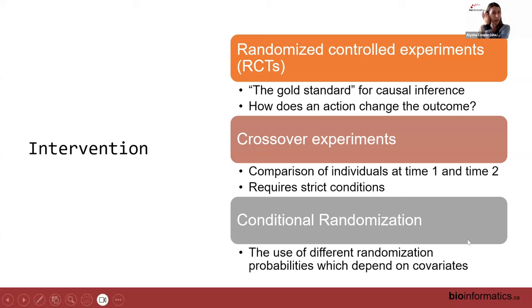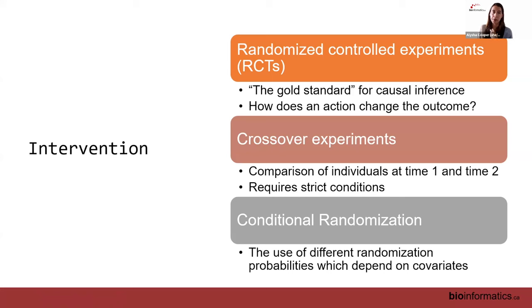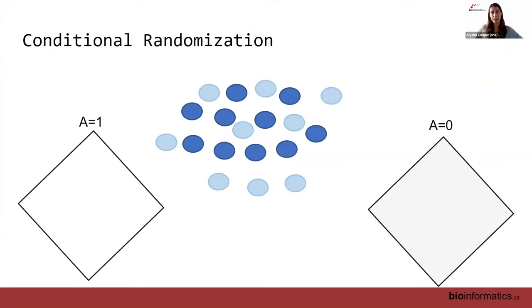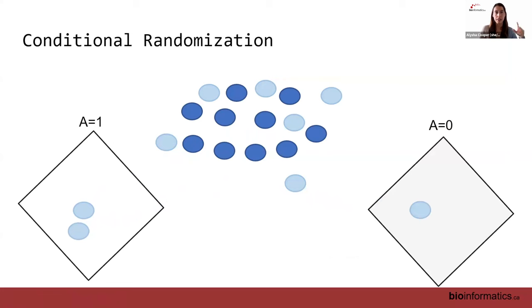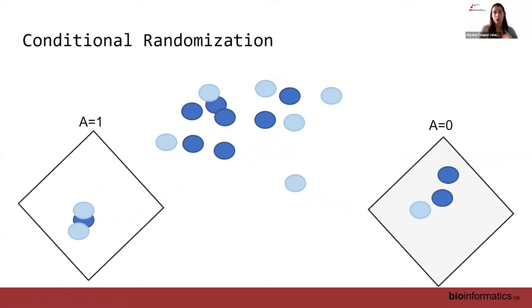Conditional randomization applies when certain individuals might be more likely to be assigned to the treatment group for clinical reasons — for example, someone with more severe cancer might have a higher probability of being assigned the experimental treatment based on severity alone. We're going to focus on conditional randomization because it's what propensity scores are based on. Let's say light blue dots have a higher probability of being assigned treatment than dark blue dots.